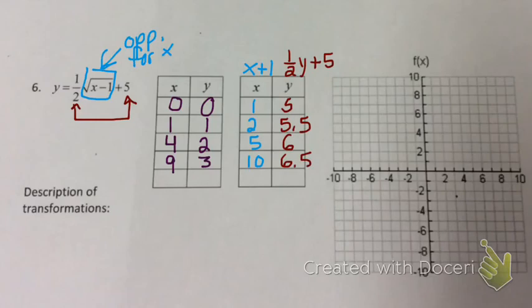And then I just plot these points. 1 comma 5 is up here. 2 comma 5.5 is in the middle there. 5 comma 6 is right here. And 10 comma 6.5 is about right there.